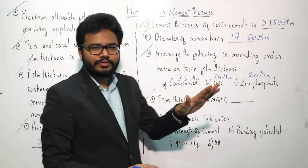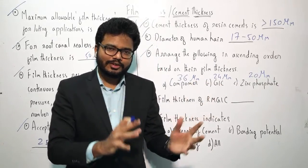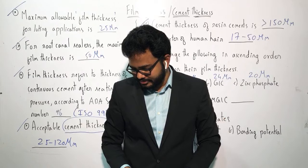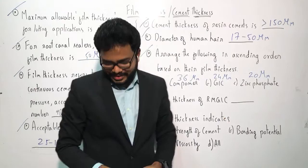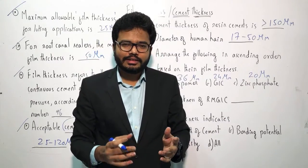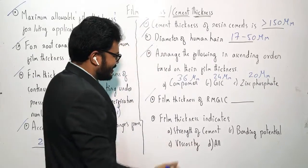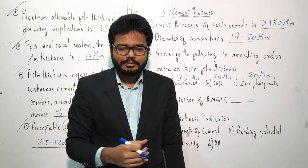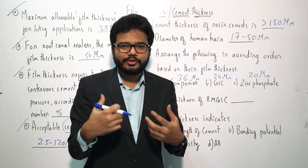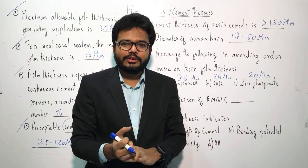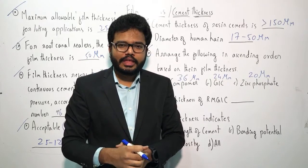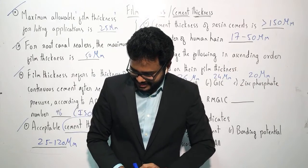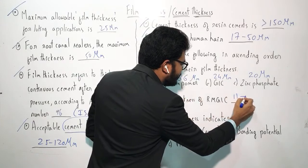For resin-modified glass ionomer cements (RMGIC), the film thickness is in the range of 11 to 22 microns. Active participation helps you remember values better — if you try to answer and are wrong, you correct yourself; if right, it reinforces the memory further.